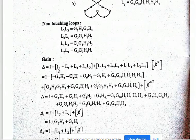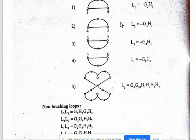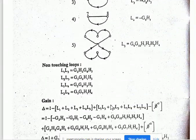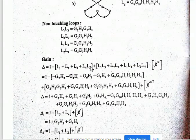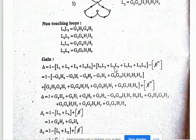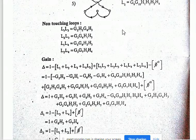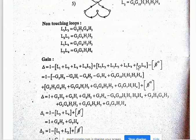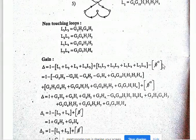Delta is equal to 1 minus the sum of all individual loops (L1 + L2 + L3 + L4 + L5), plus the sum of products of non-touching loop pairs (L1·L3 + L2·L3 + L1·L4 + L2·L4). There are no three mutually non-touching loops in this problem, so that term is zero.